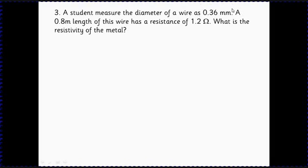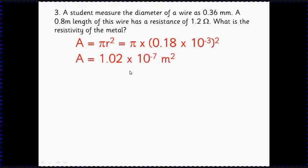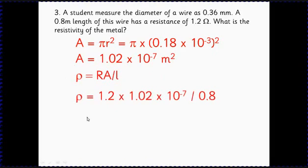This is where people start to go wrong. A student measures the diameter of a wire as 0.36 millimetres; a 0.8 metre length of this wire has a resistance of 1.2 ohms. What's the resistivity? The key issue is we have the diameter, not the cross-sectional area. First do a separate calculation: area equals pi r squared, divide 0.36 by 2 to get the radius 0.18, convert millimetres to metres using 10 to the minus 3, giving 1.2 times 10 to the minus 7 square metres. Then substitute into the equation to get a resistivity of 1.53 times 10 to the minus 7 ohm metres.